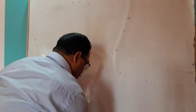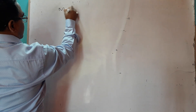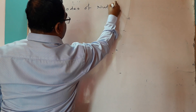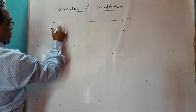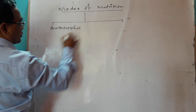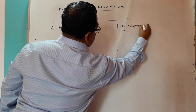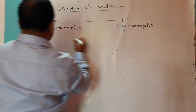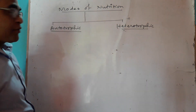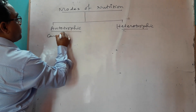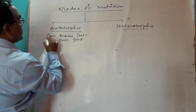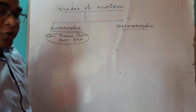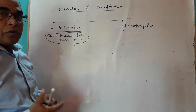Basically there are two types of nutrition. One is autotrophic nutrition and another is heterotrophic. What is autotrophic? Autotrophic nutrition means the organism can make their own food. These organisms are called autotrophs, and this type of nutrition is called autotrophic nutrition. Examples are plants, some algae, and some bacteria.